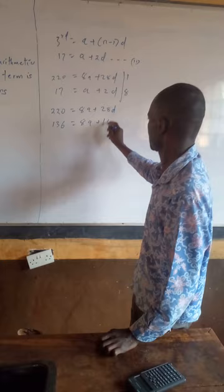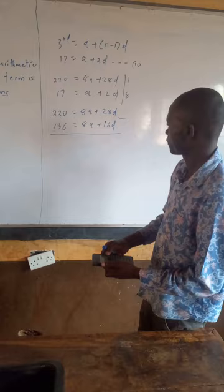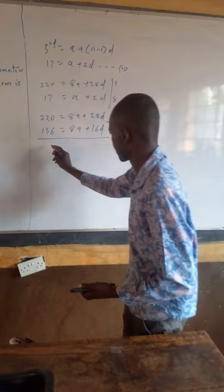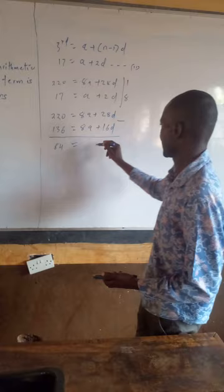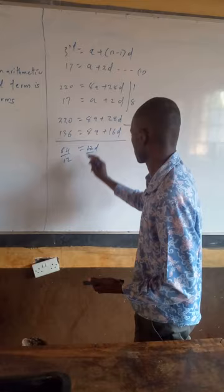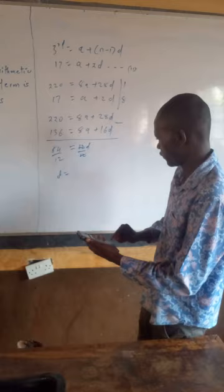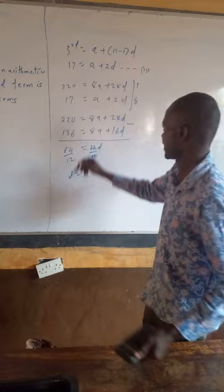We subtract the second from the first: 220 minus 136 gives us 84, equal to 8A minus 8A which is 0, plus 28D minus 16D which gives us 12D. We divide both sides by 12, so our value for D becomes 84 divided by 12, which gives us 7. So our common difference D is 7.